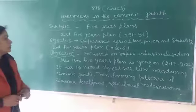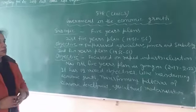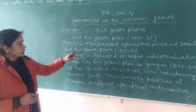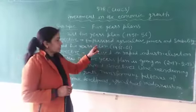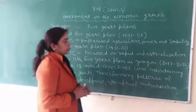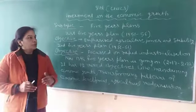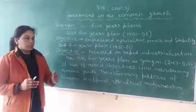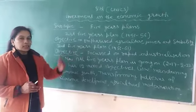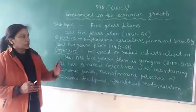The first Five-Year Plan was based on agriculture. The objective was to emphasize agricultural growth, power, and stability. The government focused on this sector and decided that first of all, everything had to be done in the agriculture sector.